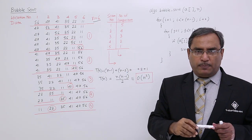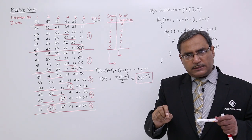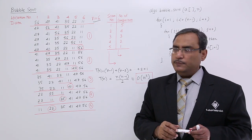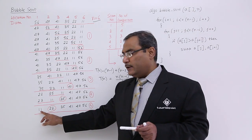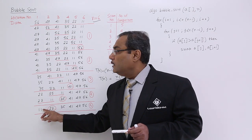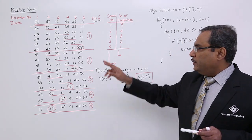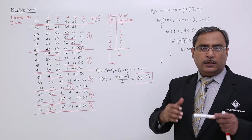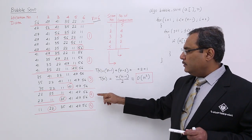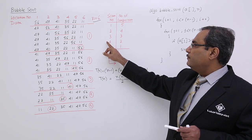Out of n numbers, if we place n minus 1 numbers in sorted form, the nth one is automatically in place — so there is no need to sort 11 separately, as it is already the smallest at position 1. How many scans did we require? 5 scans. What is 5? It is n minus 1.